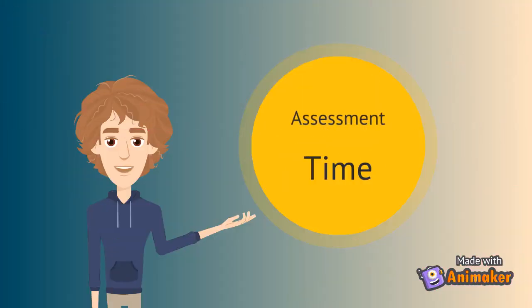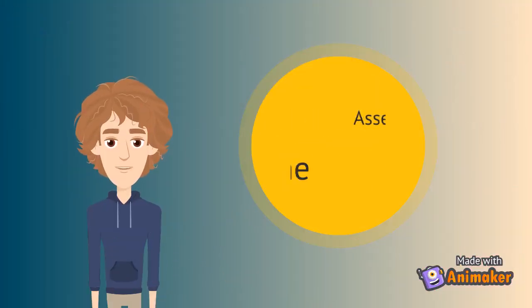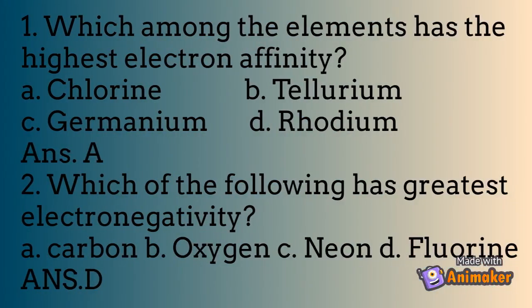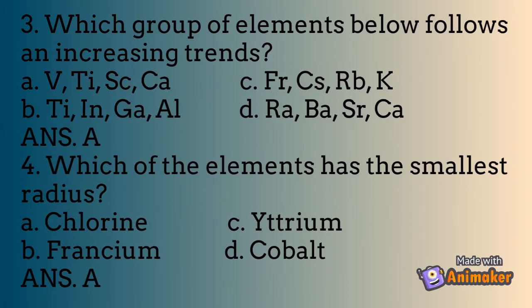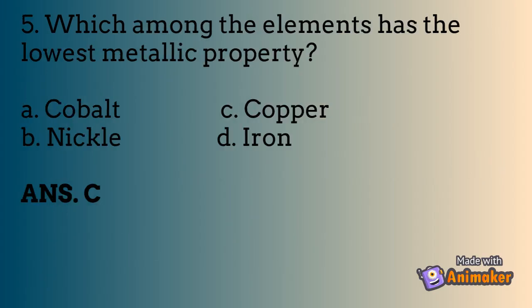Let's answer the assessment. Choose the letter of the correct answer. Number one: which among the elements has the highest electron affinity? A. Chlorine, B. Fluorine, C. Germanium, D. Rhodium — answer: A, chlorine. Number two: which of the following has the greatest electronegativity? A. Carbon, B. Oxygen, C. Nitrogen, D. Chlorine — answer: D, chlorine. Number five: which among the elements has the lowest metallic property? A. Cobalt, B. Nickel, C. Copper, D. Iron — answer: C, copper.